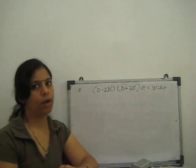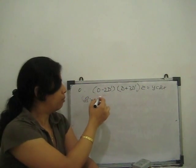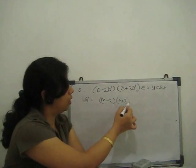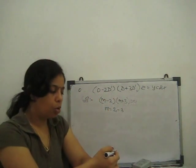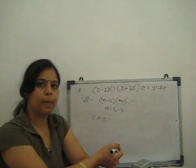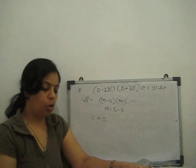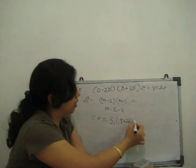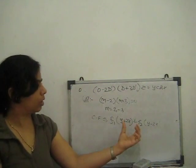For homogeneous, to find the complementary function, put D = m and D' = 1. So (m − 2)(m + 3) = 0, giving roots m = 2 and m = −3. The complementary function is written as f1(y + 2x) + f2(y − 3x).